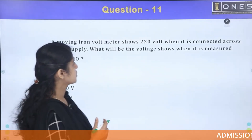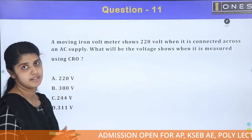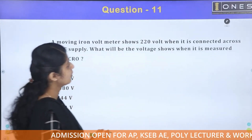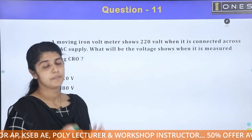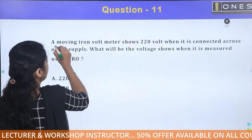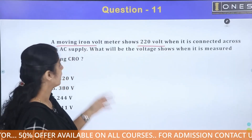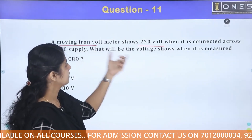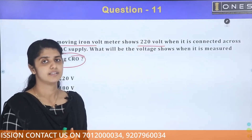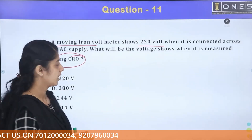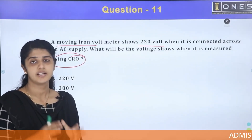A moving ion voltmeter shows 220 volts when connected across an AC supply. What voltage will be shown when measured using a CRO? The moving ion voltmeter is an AC meter, and we will examine what value it actually reads.